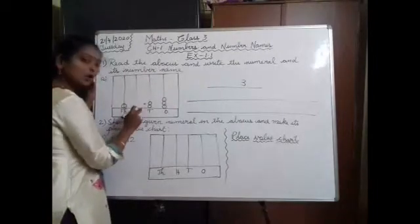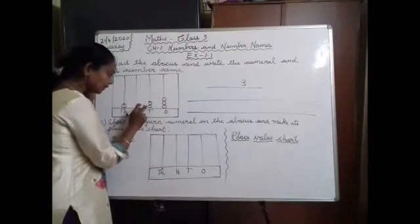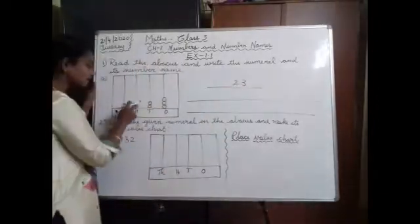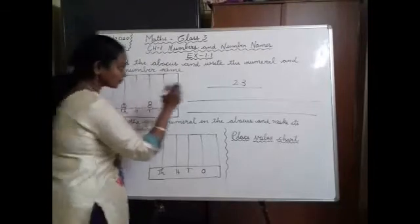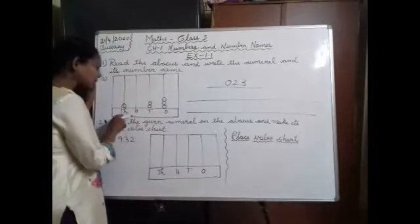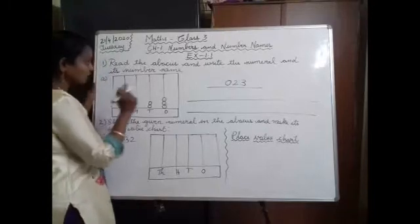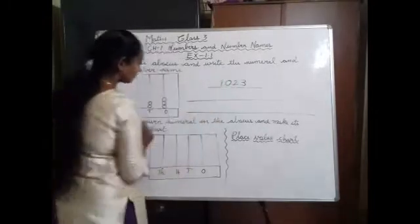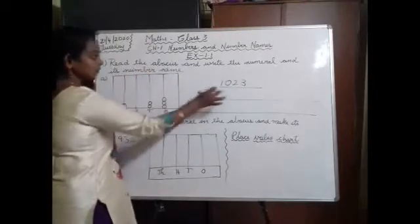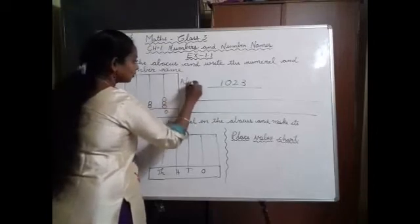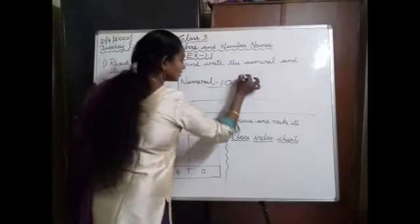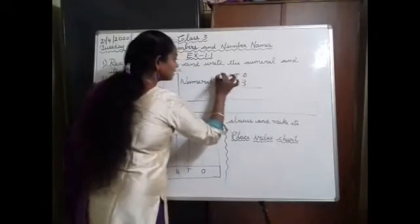Then in the 10's place, how many balls are there? 1, 2 — 2 balls. I am writing 2. In the 100's place, no balls are there, so I am going to write 0. In the 1000's place, how many balls are there? 1. So the numeral is 1,023 — ones, tens, hundreds, thousands.